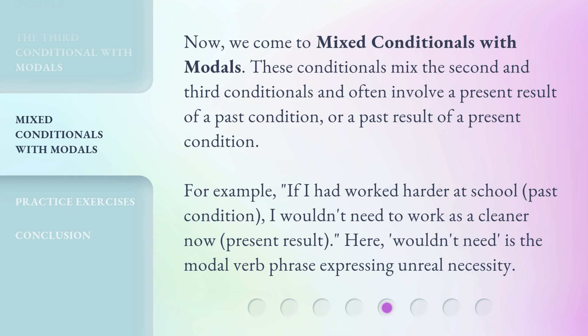Now we come to mixed conditionals with modals. These conditionals mix the second and third conditionals and often involve a present result of a past condition, or a past result of a present condition. For example: if I had worked harder at school (past condition), I wouldn't need to work as a cleaner now (present result). Here, 'wouldn't need' is the modal verb phrase expressing unreal necessity.